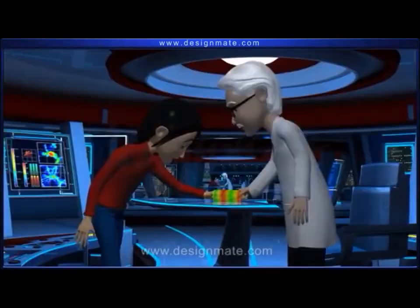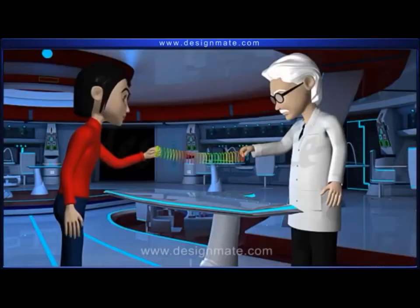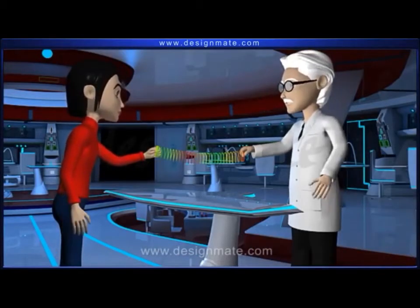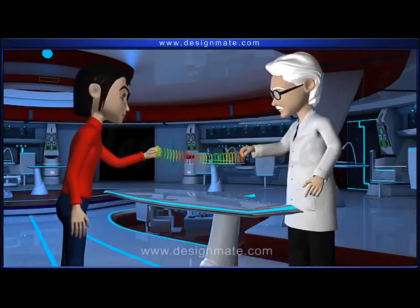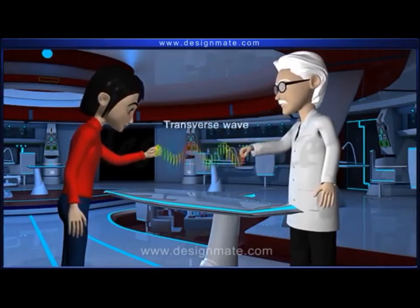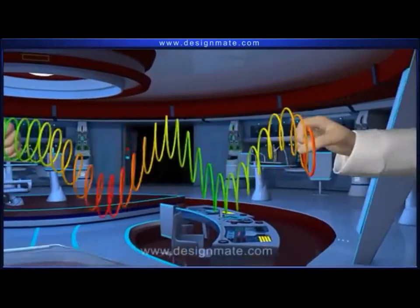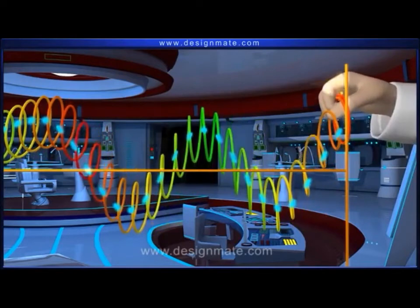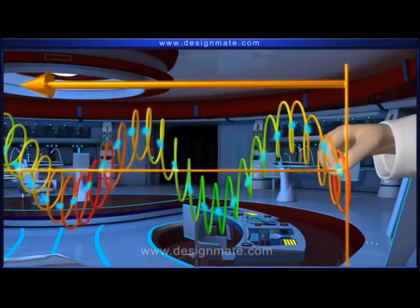Emily is holding one side of the slinky while Dr. Zook is holding the other end. With a quick upward flick of the wrist, Dr. Zook has sent energy traveling through the slinky. Notice how the slinky moves. This is a transverse wave. In a transverse wave, the particles vibrate at a right angle to the direction of the wave. The wave traveled from Dr. Zook to Emily and back.